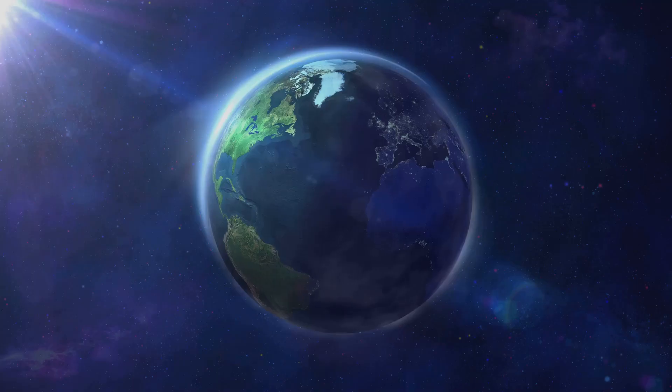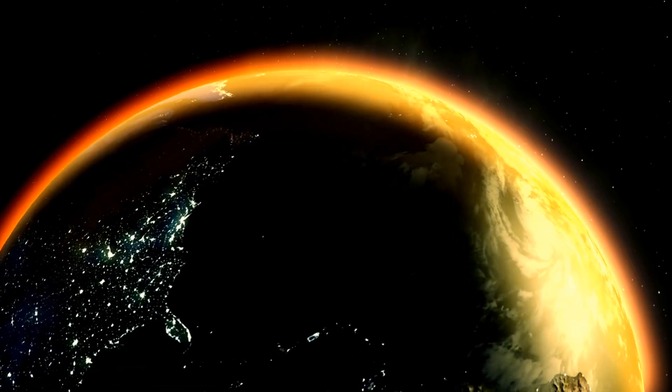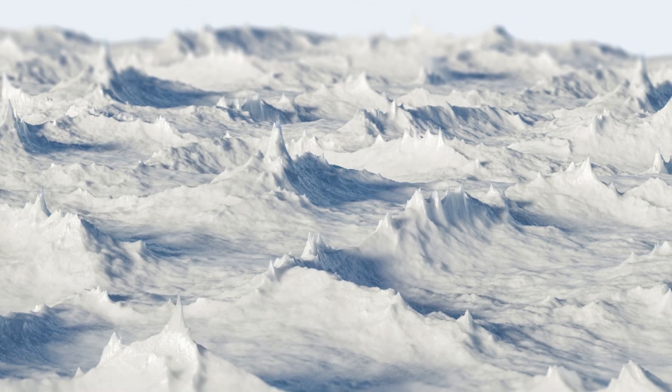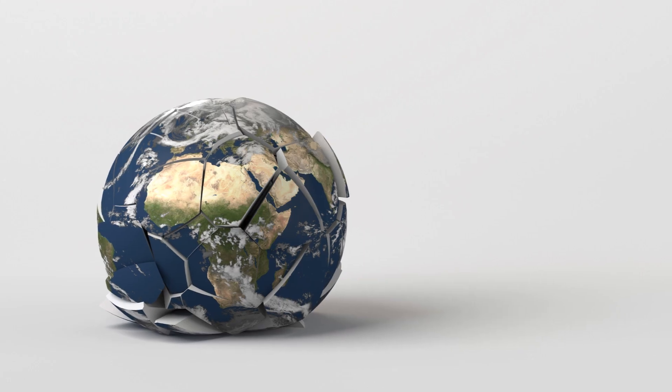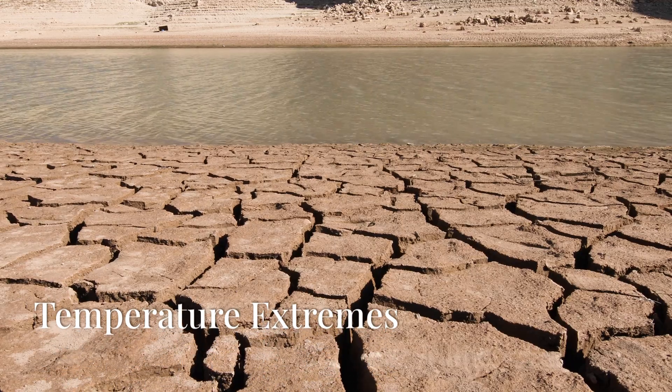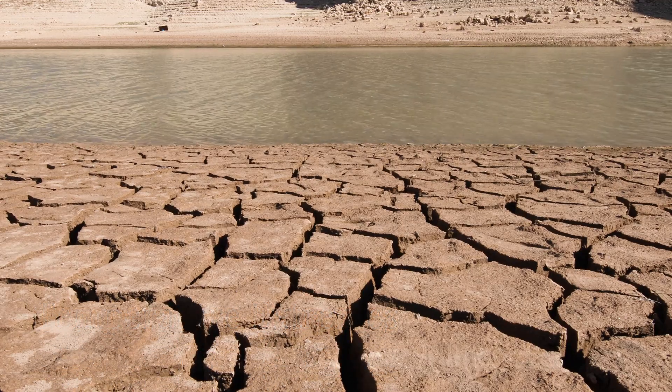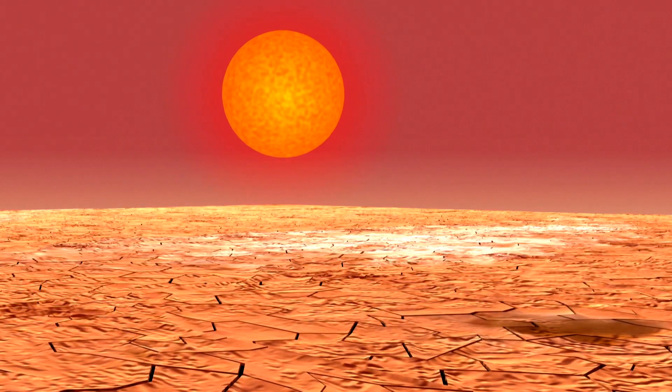If Earth stopped spinning, one side would constantly face the sun, while the other side would remain in perpetual darkness. This would create extreme temperature differences, with one side scorched by the sun and the other freezing in eternal night. Entire ecosystems would collapse, unable to adapt to the lack of a day-night cycle.